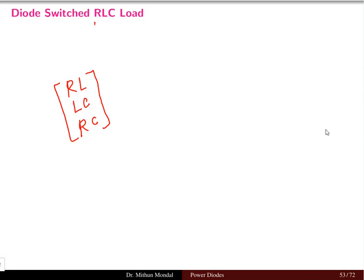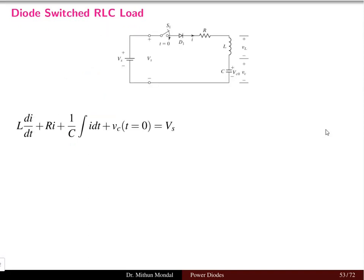In this lecture we will focus our discussion on RLC load and we will use the power diodes to govern the circuit. In this circuit we have a diode connected in a network and the load is made up of resistance, inductance, and capacitance, which is known as RLC load. A switch is connected in the circuit which is closed at time t equal to 0.